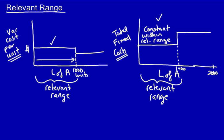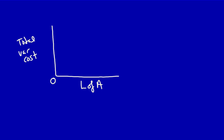What would the relevant range look like if we were looking at the total variable cost? Let's graph the total variable cost to see what's going to happen. We got the level of activity, and we've got total variable costs. Remember, we said if we produce zero, it's going to cost us zero. But as soon as we produce even one, it's going to start costing us.